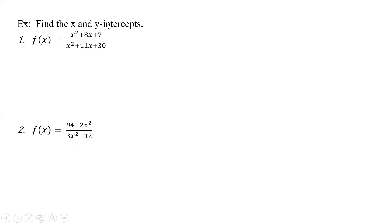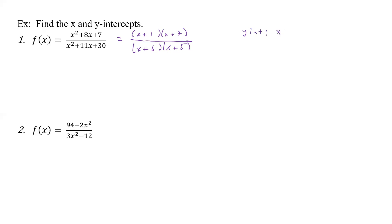For this next problem, all they want are the x and y intercepts. We're going to factor. The numerator factors as (x plus 1)(x plus 7). The denominator factors as (x plus 6)(x plus 5), since factors of 30 that add to 11 are 6 and 5. Nothing cancels. For the y-intercept, we substitute x equals 0: we get 1 times 7 over 6 times 5, which is 7 over 30. So the y-intercept is (0, 7/30).